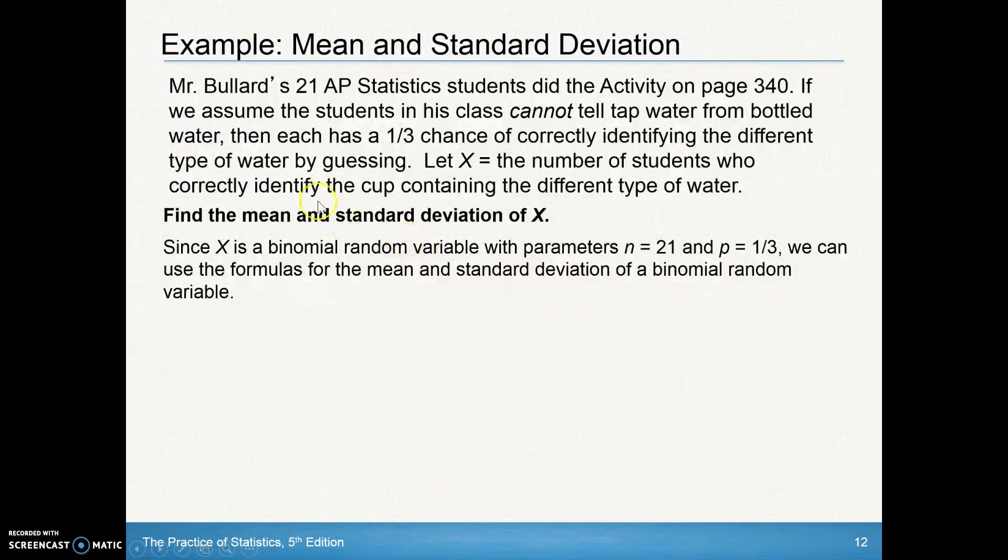We can look at an example of this. Mr. Bullard's 21 AP statistics students did the activity on page 340. If we assume the students in this class cannot tell tap water from bottled water, then each has a one-third chance of correctly identifying the different type of water by guessing. x equals the number of students who correctly identify the cup containing the different types of water. That x can take on anywhere between 0 all the way up to 21, representing the number of students in this class who can identify the cup containing a different type of water.